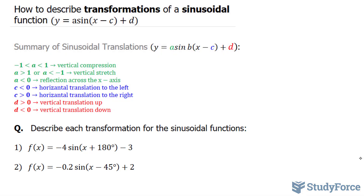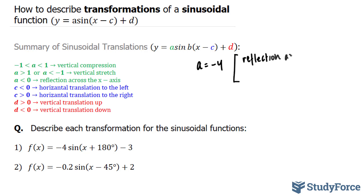Our a value here is negative 4. And what this tells us is the following: if a is less than 0, you end up with a reflection across the x-axis. So the first thing this tells us is a reflection across the x-axis.